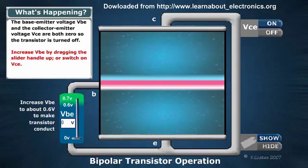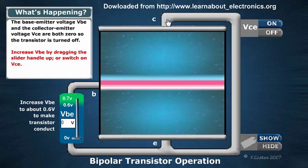With the NPN transistor, we have a diagram here which shows the collector, emitter, and base. The collector effectively collects electrons and the emitter emits electrons, so electrons go from the emitter to the collector.